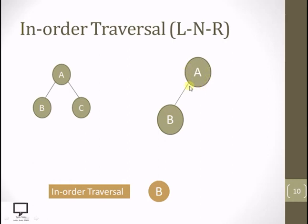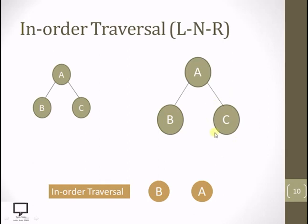Make A the root again. We have done with the left subtree, so now process the root node A. Then check for a right child — A has right child C, so step down. Make C the root. C is a leaf node, so no left child. Process C, then check for right child — not present. We have completed the in-order traversal of the binary tree: B, A, C.